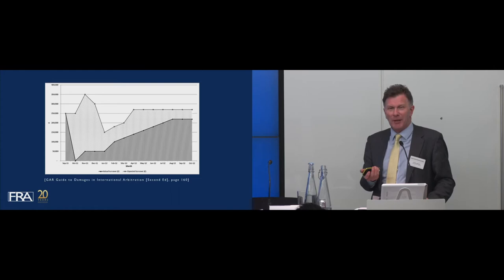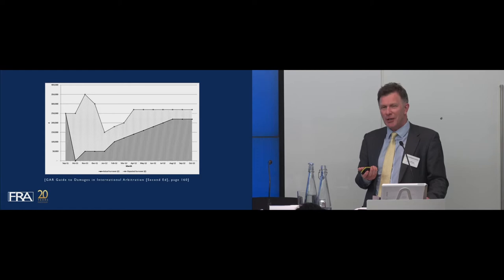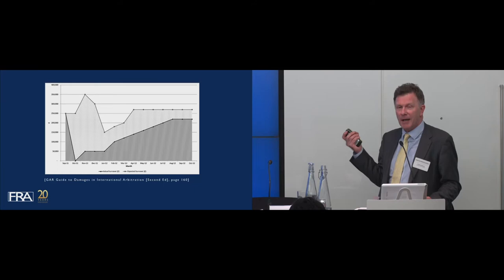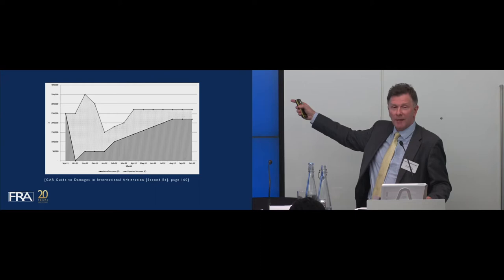I love this graph — it's the only picture in any Global Arbitration Review publication ever, and I'm not quite sure why I was ever allowed to get it in. It came from Steve's firm; John Trenner allowed us to put in a picture. It illustrates very pictorially what one is trying to do in any damages claim: the bottom line is what actually happened in practice, and the top line is what would have happened — what we quantum people love to talk about as the 'but for' scenario.